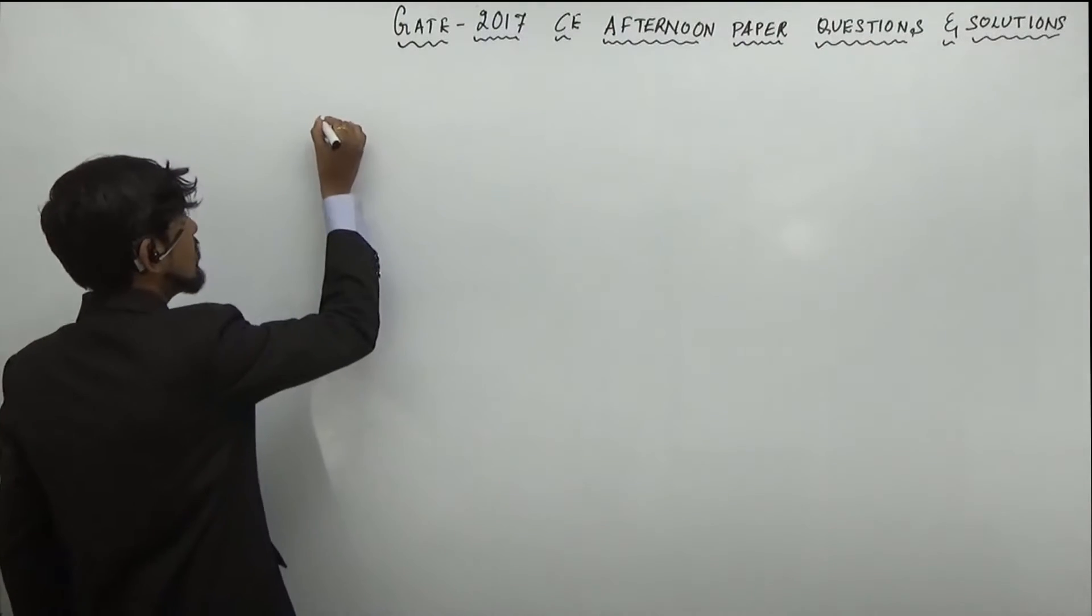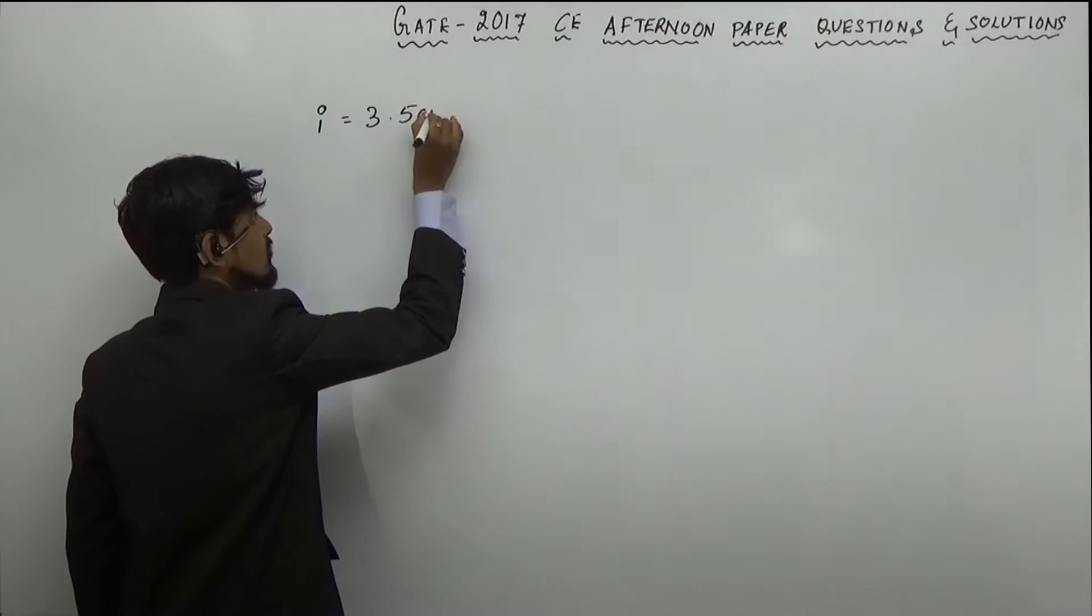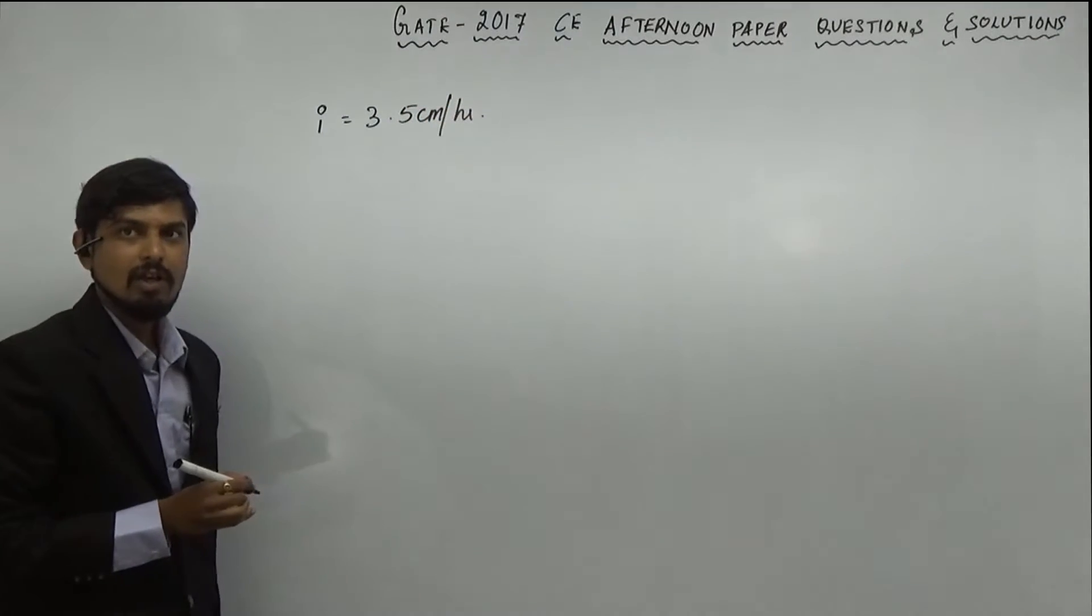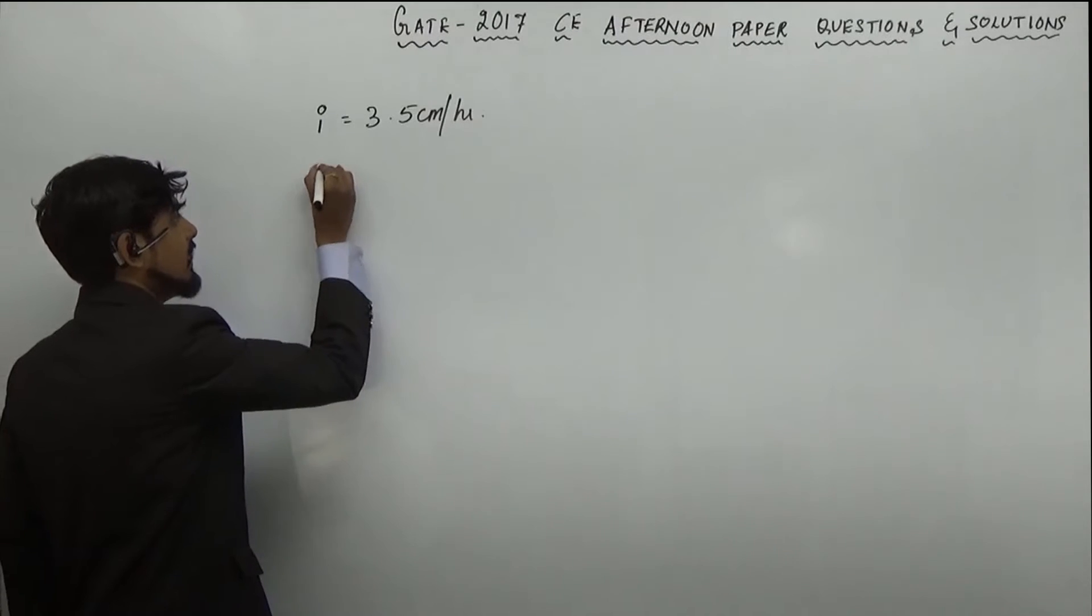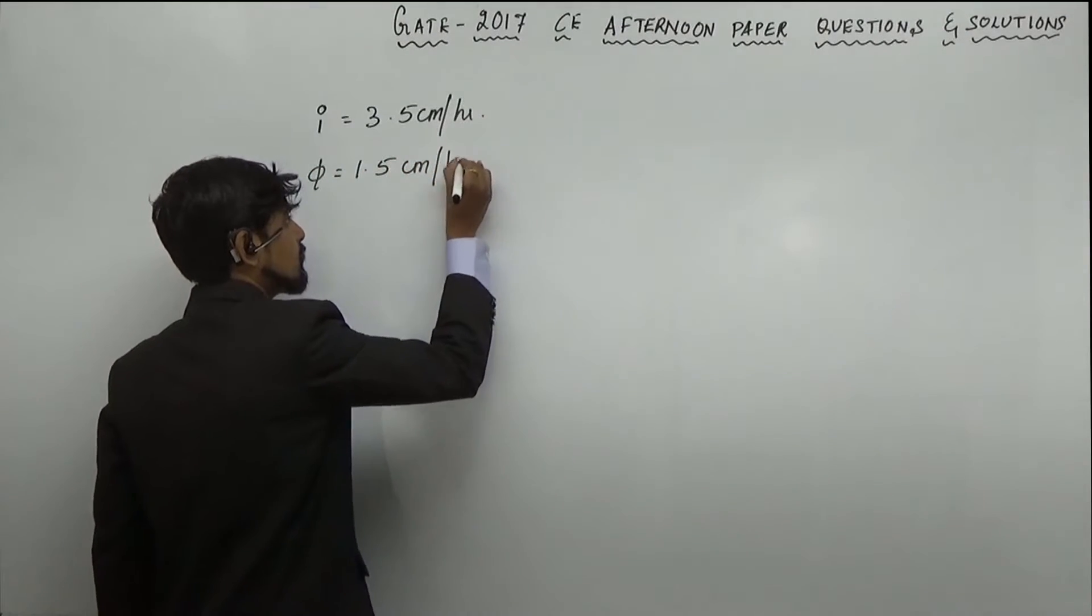What is given is, here rainfall intensity i is given that is equal to 3.5 cm per hour. Next, phi index is given as 1.5 cm per hour.